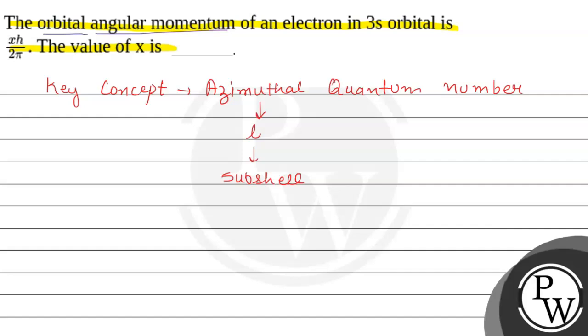Here we will see the orbital angular momentum. Orbital angular momentum has a formula: that is under root of l into l plus 1, h over 2π. So this is the formula.